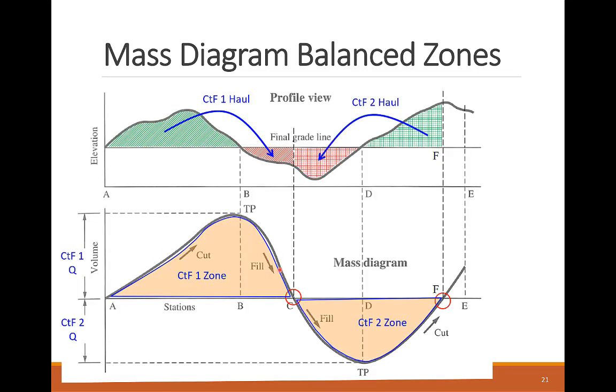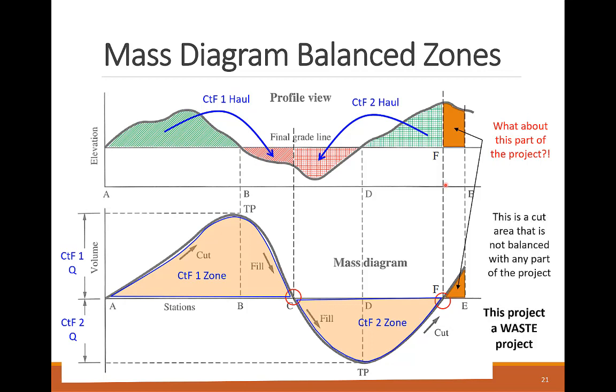This is another example where you can see two balanced CTF zones and their haul directions. But we can see here that there is a last segment of the project that was not included in any of the balanced zones, that one between points E and F. From the profile view, this is a cut segment, but the resulting soil has no place to be used as a fill. So this soil material has no use on the site and needs to be hauled off the site. This is why we call this project a waste project, because we are wasting excavated soil instead of recycling it within the project, which is not feasible with the project design geometry. As a hint, you can identify a waste project by finding a positive mass ordinate value at its ending station.